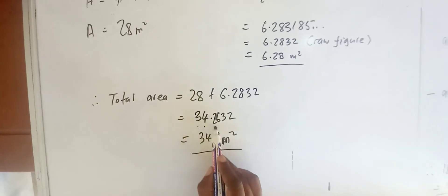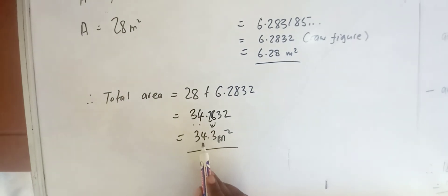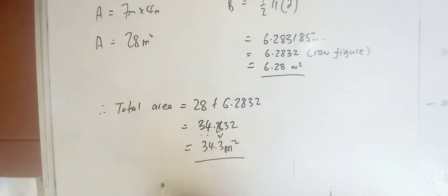So one, two, three. If this figure is 5 or greater, you add a 1. And hence, you've got 34.3 square meters as the total area.